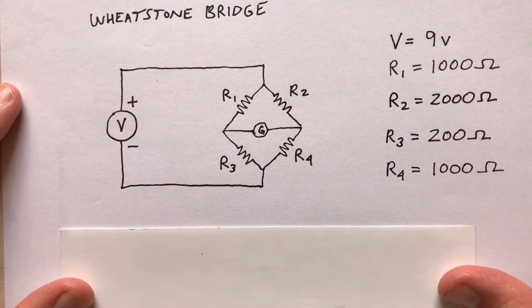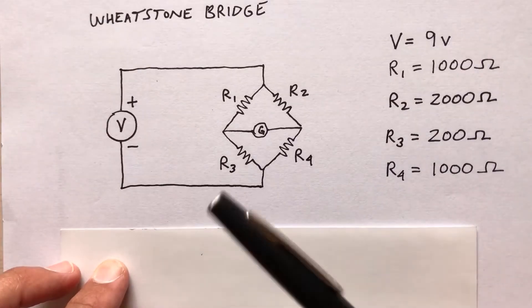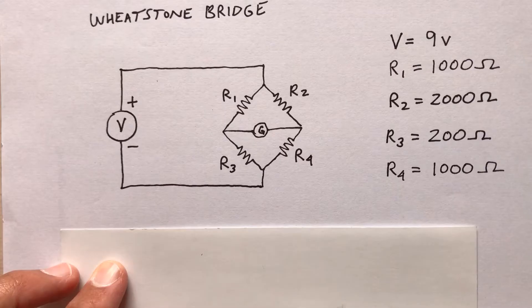So this is what we would call a Wheatstone bridge circuit. It's got a source of power V, four resistors: R sub one, R sub two, R sub three, R sub four.